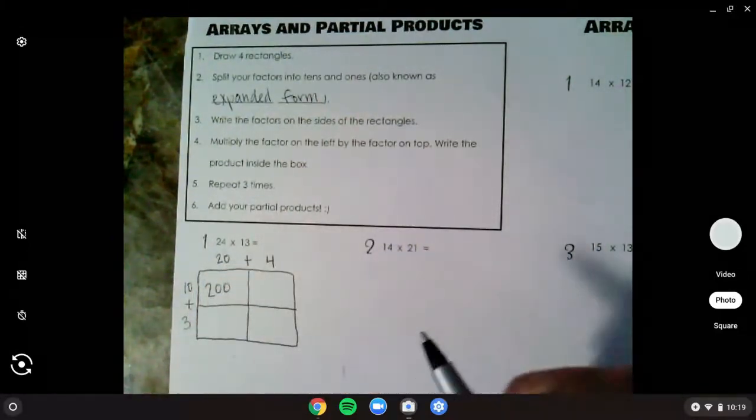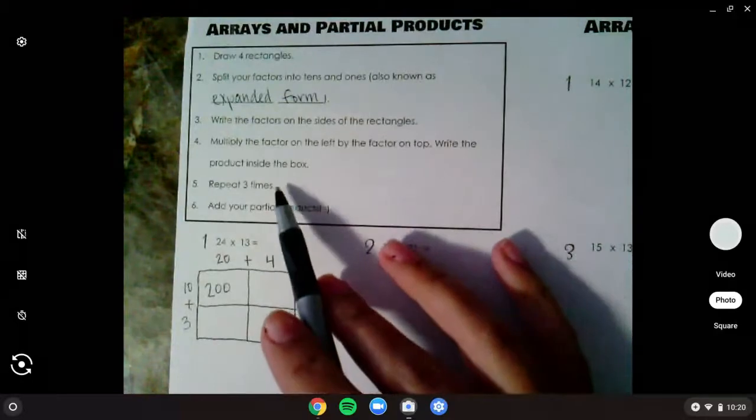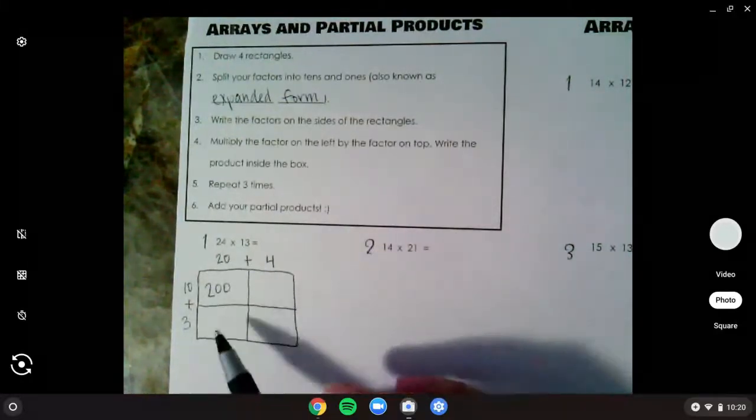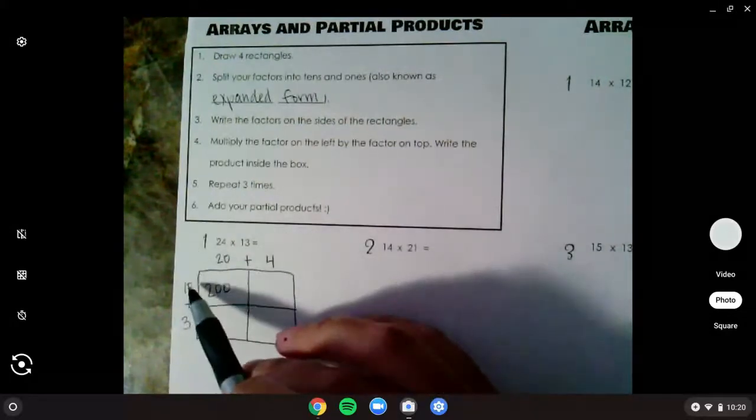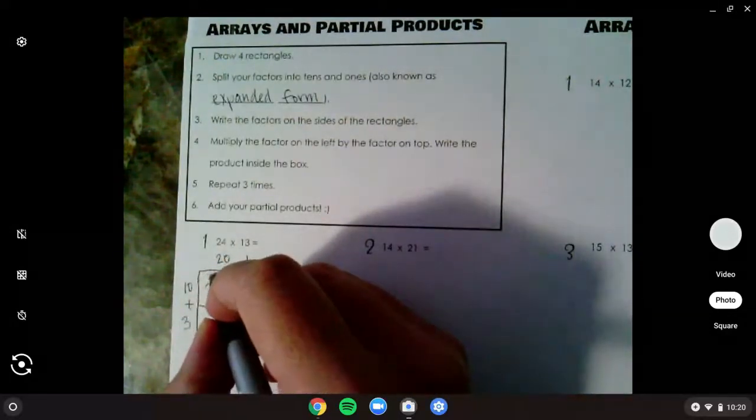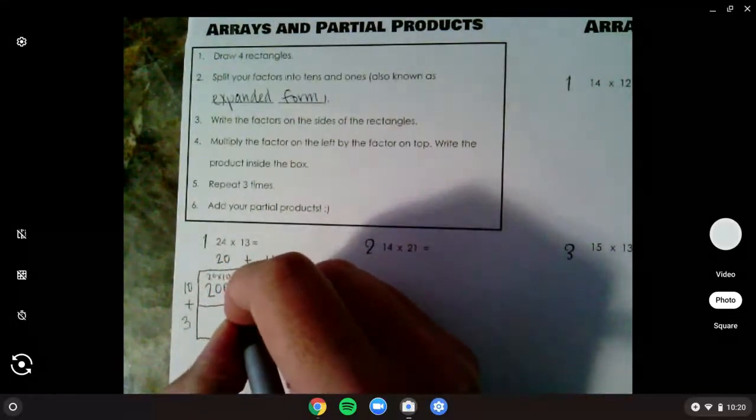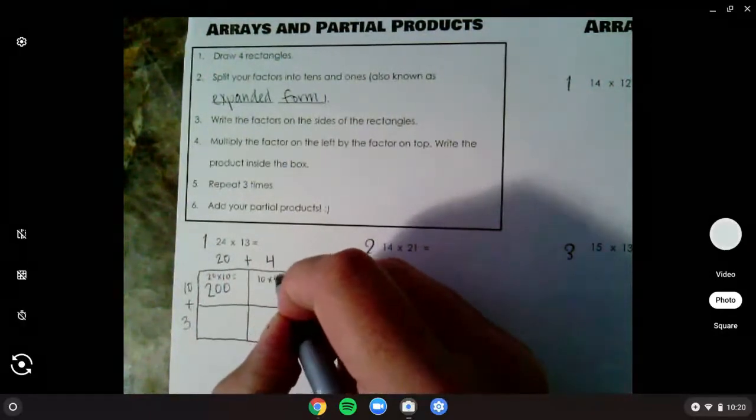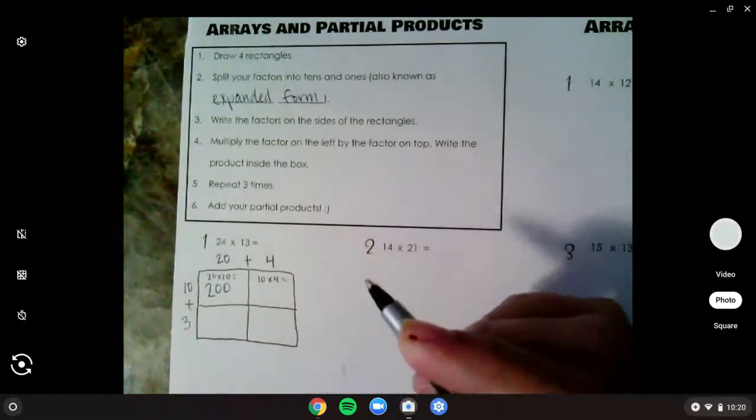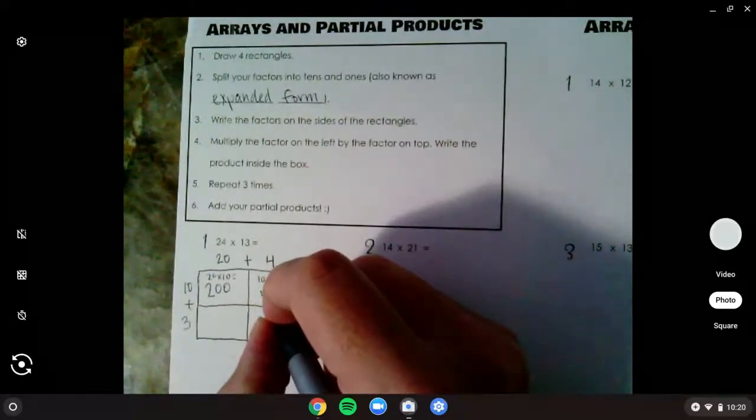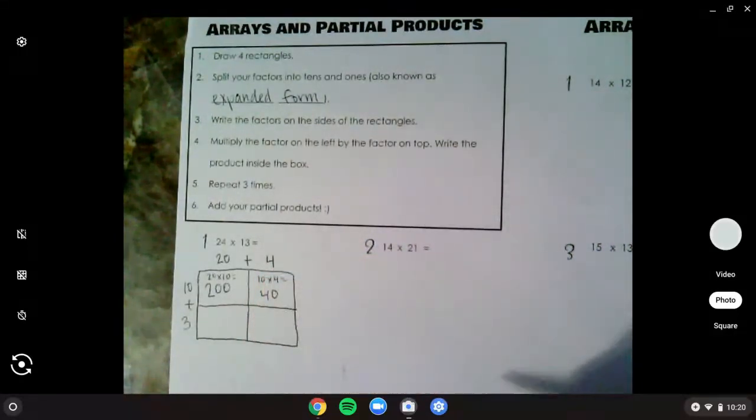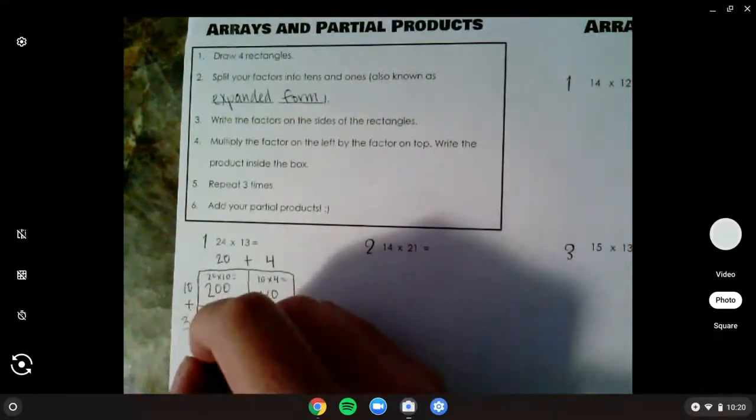Don't lose those skills. Now, I'm going to repeat three times because I have three more boxes. So I always use the one on the left by the one on top. So now I'm going to do 10 times 4. Well, this is what we did a long time ago. 10 times 4. 4 times 1 is 4, and add 1 zero is 40.